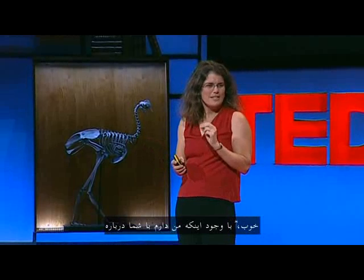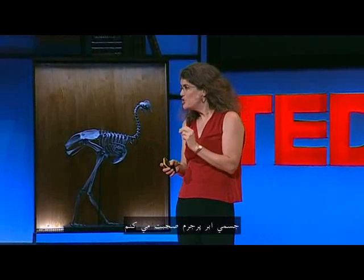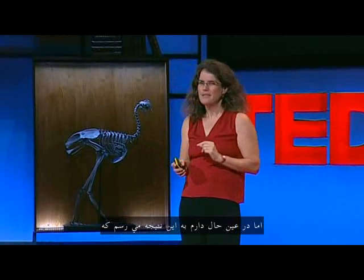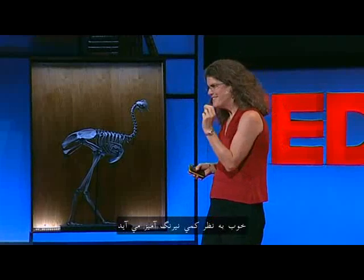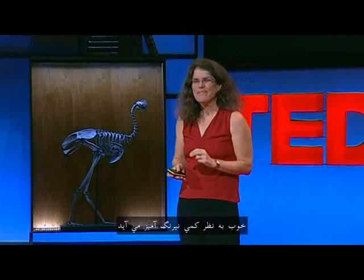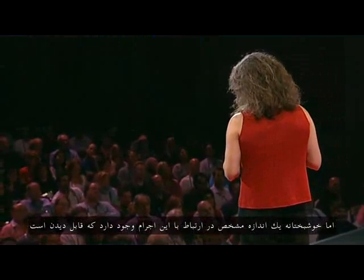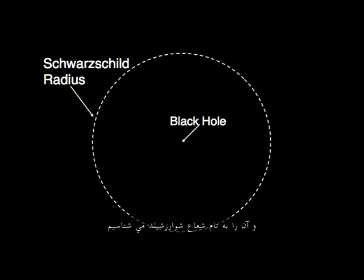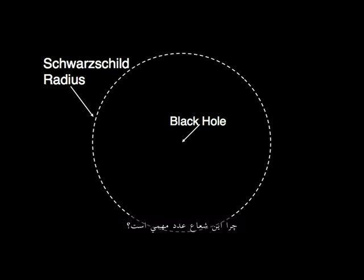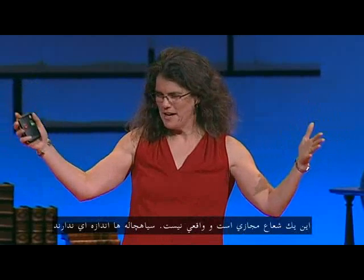Despite the fact that I'm going to talk about an object that's supermassive, it has no finite size. Fortunately, there is a finite size that you can see, and that's known as the Schwarzschild radius, named after the man who recognized why it was such an important radius. This is a virtual radius, not reality — the black hole itself has no size.